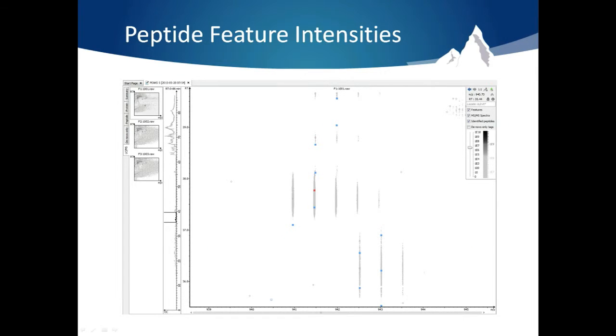It will bring you to the location in the LC-MS heat map where the MS-MS event occurred. This map gives you a top-down view of the signal coming out of the mass spec in terms of M over Z, retention time, and intensity.